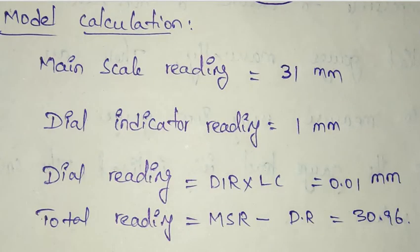For example, we take a calculation like this. Main scale reading, for example. If you do the experiment, there is one value according to that bore. That main scale reading is 31 mm and dial indicator reading is 1 mm. That is, it completes one revolution. And dial reading is equal to dial indicator reading into least count. 1 into 0.01 mm. We know that least count is 0.01 mm. And total reading is main scale reading minus dial reading. That is 31 minus 0.01 mm equals 30.99 mm. This is how to calculate.